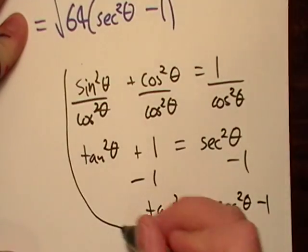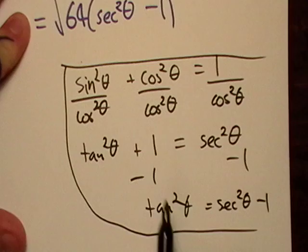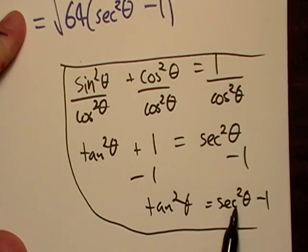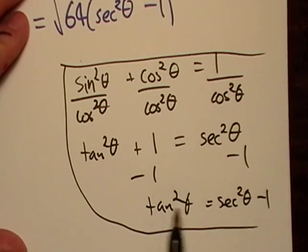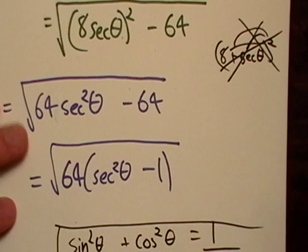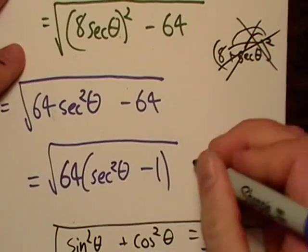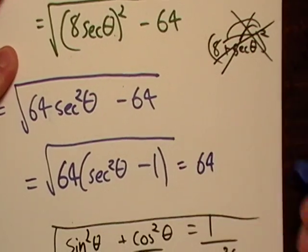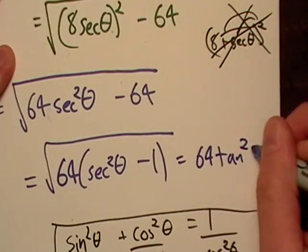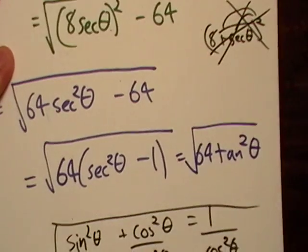All this work right here was just a little side note, just to find out what secant minus 1 is. Secant squared minus 1 is equal to tangent theta, so that's what I'm going to do. I'm going to plug that in. So that's going to equal 64 tangent theta squared.